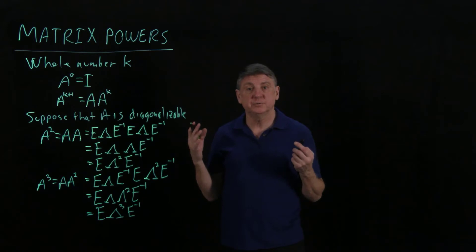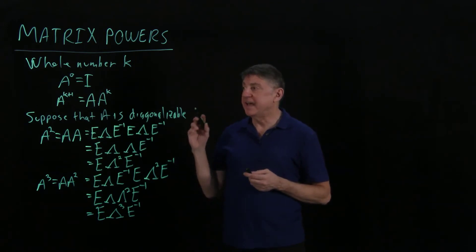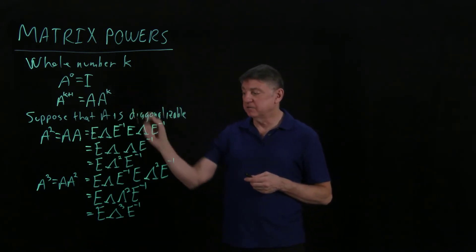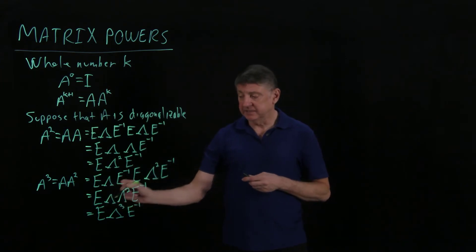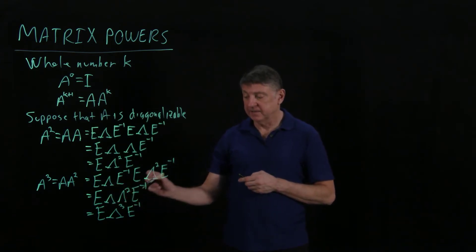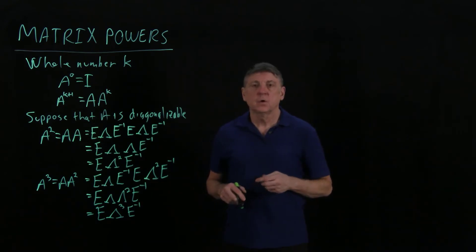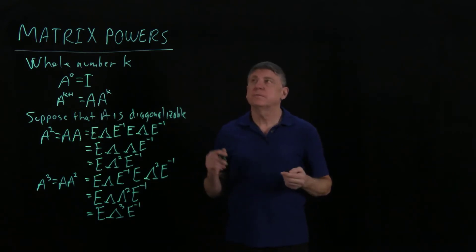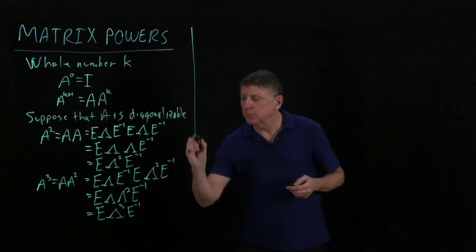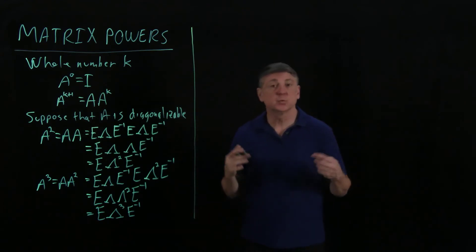We now have enough material to form a theorem, and we could use mathematical induction to show that A to the k in general is E times lambda to the k times E inverse. One of the motivating ideas in this lecture is: what is the square root of a matrix?